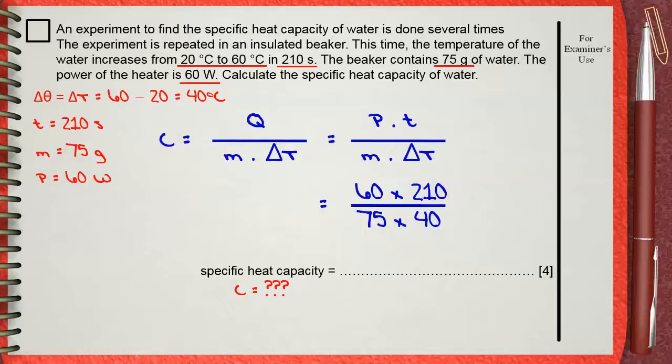you will find that the specific heat capacity of water is 4.2 joules per gram dot degree Celsius. This is the unit of the specific heat capacity. And this is how we answer calculation questions in this lesson.